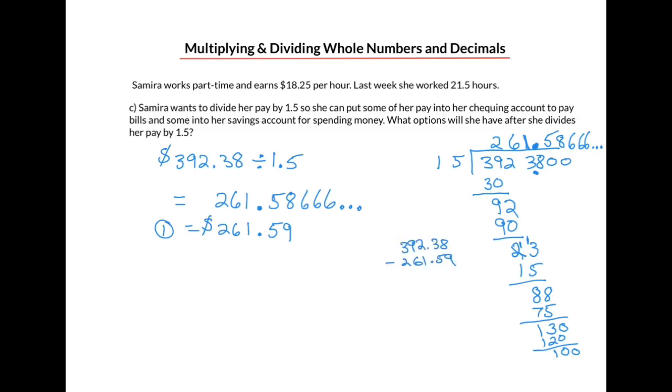Well, what we can do is we can take the 392.38 and subtract 261.59 to find out how much is left over. And when we do that, using our subtraction technique of decimals, making sure the decimals are lined up, we'll end up with 130.79 or $130.79. That becomes our second option.